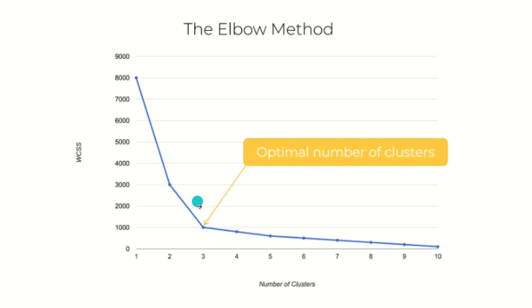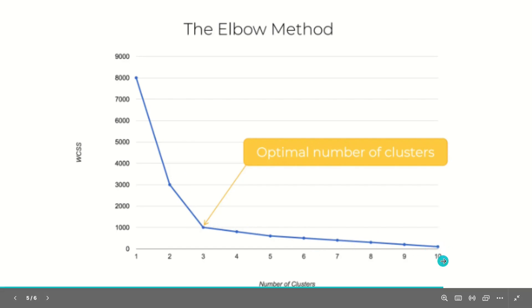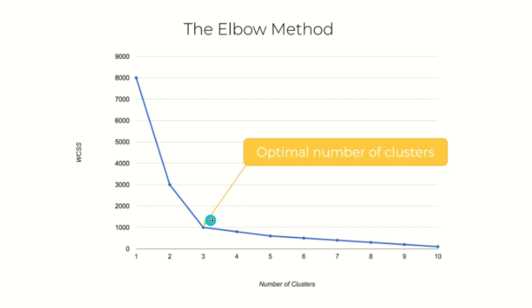In this case, the optimal number of clusters is three. You can see after three, there's a sharp decrease, and it'll be almost zero at 10. This confirms what I told you: if you keep increasing clusters, WCSS values keep decreasing. This is how we find the number of clusters using the elbow method.